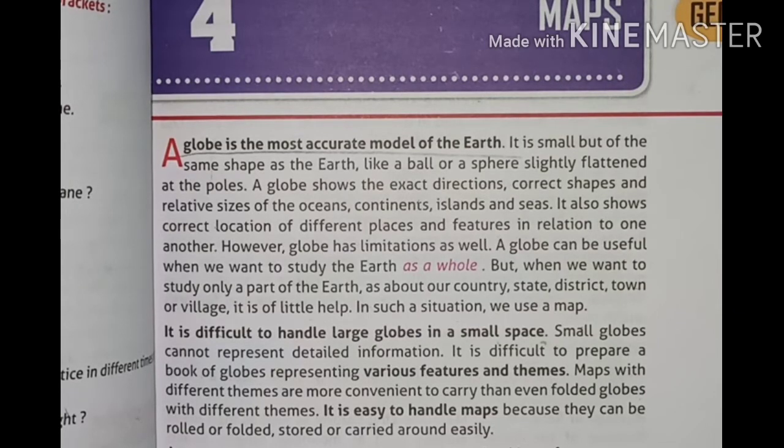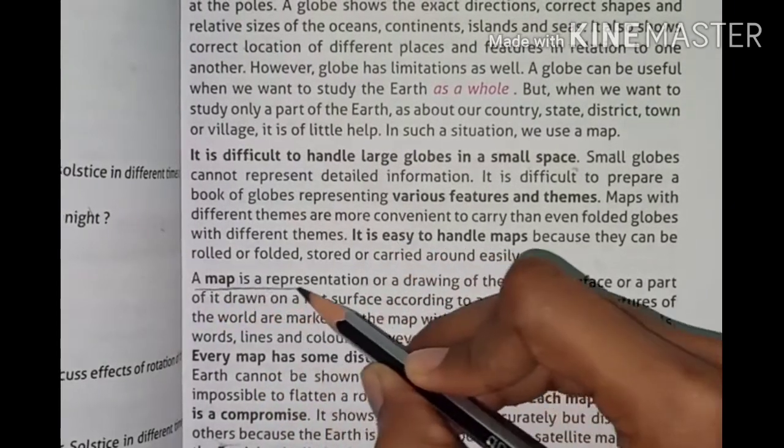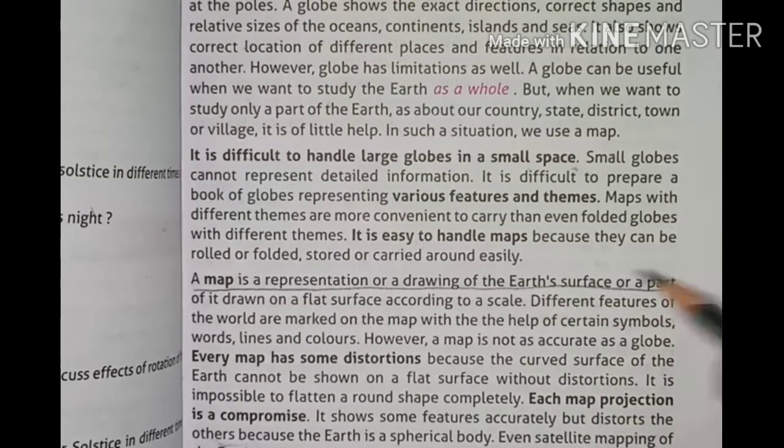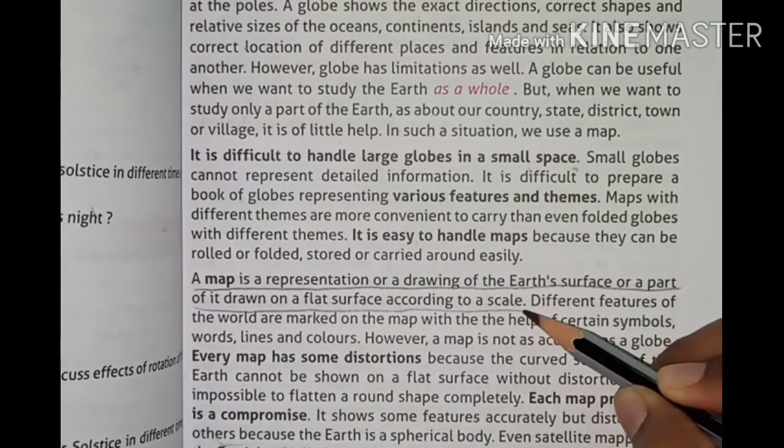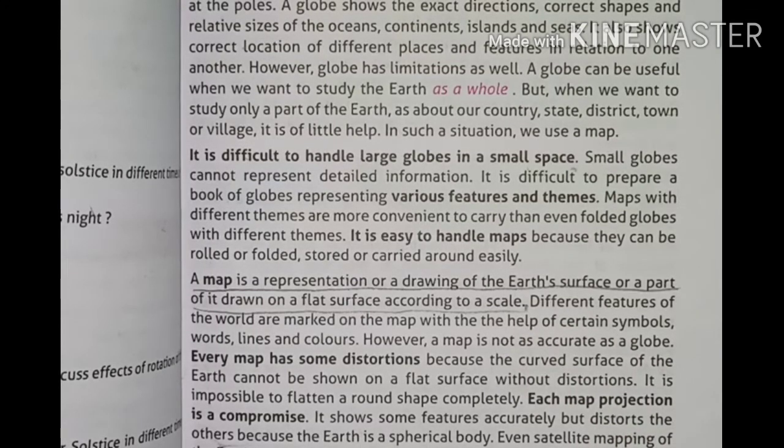A map is a representation or a drawing of the earth's surface or a part of it drawn on a flat surface according to a scale. The part of the earth's flat surface is made according to scale. We can take it anywhere.